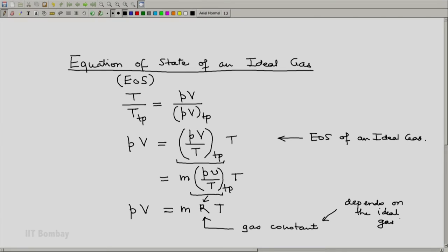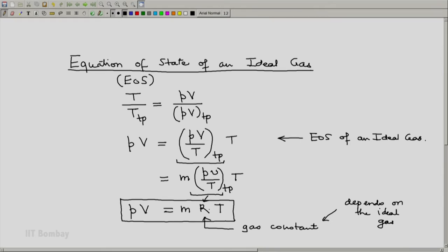If we approximate oxygen as an ideal gas, we will have one value of the gas constant. That would be the gas constant for oxygen. If we use nitrogen and consider it to be an ideal gas, we will have a different gas constant for nitrogen. Similarly, any gas when approximated as an ideal gas will have a value of R which is specific to that gas.